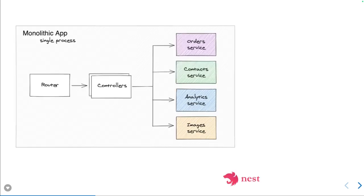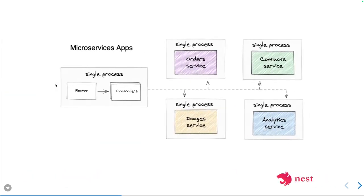They are tightly coupled because you might be using a single database for managing contacts, orders, analytics, and image services. The better approach is to divide into a single process per concern. You can have a front-end gateway interface as one service, and the gateway delegates requests to specific independent loosely coupled services. If the order service goes down, it is not impacting the contact or analytics service.